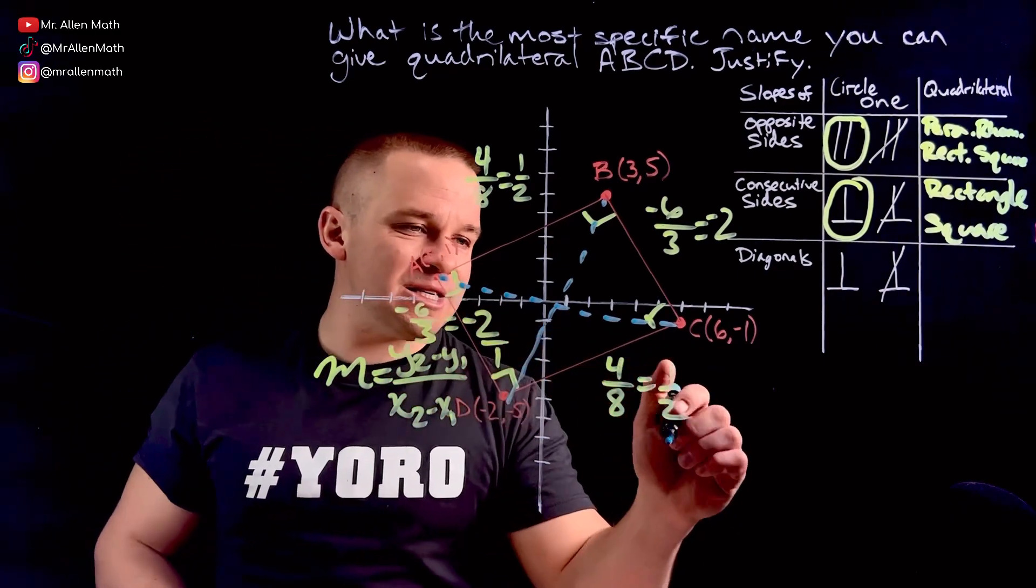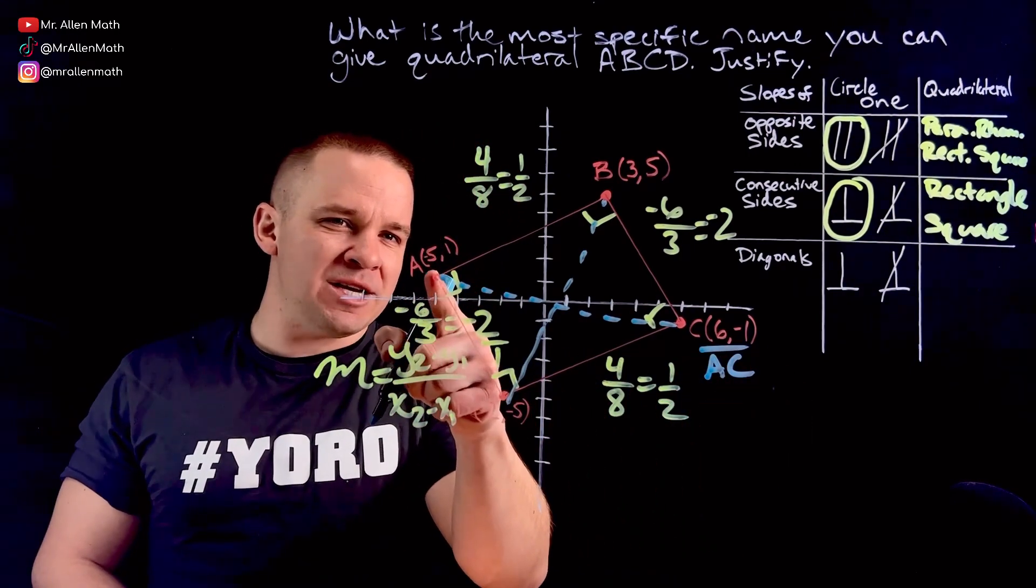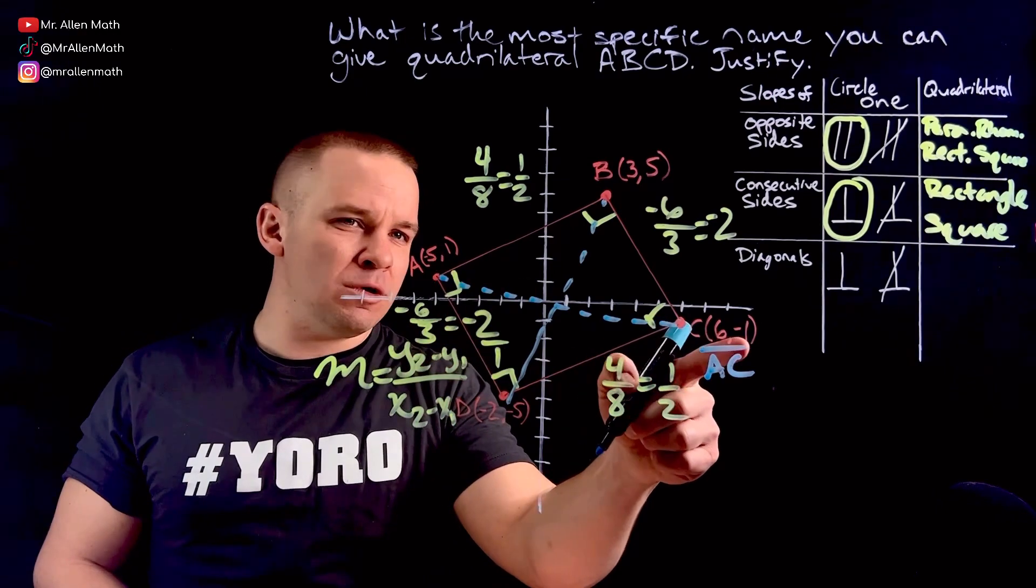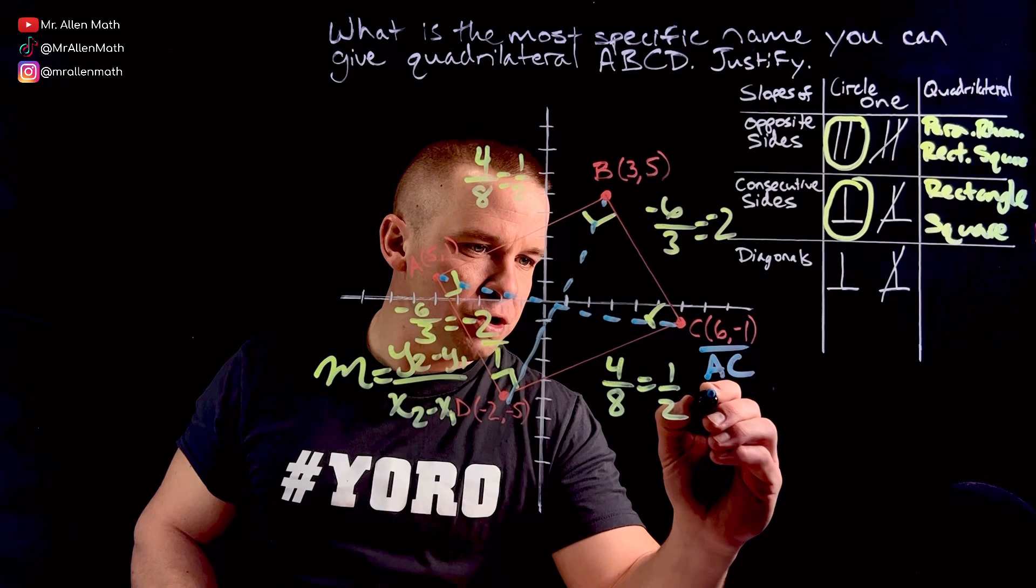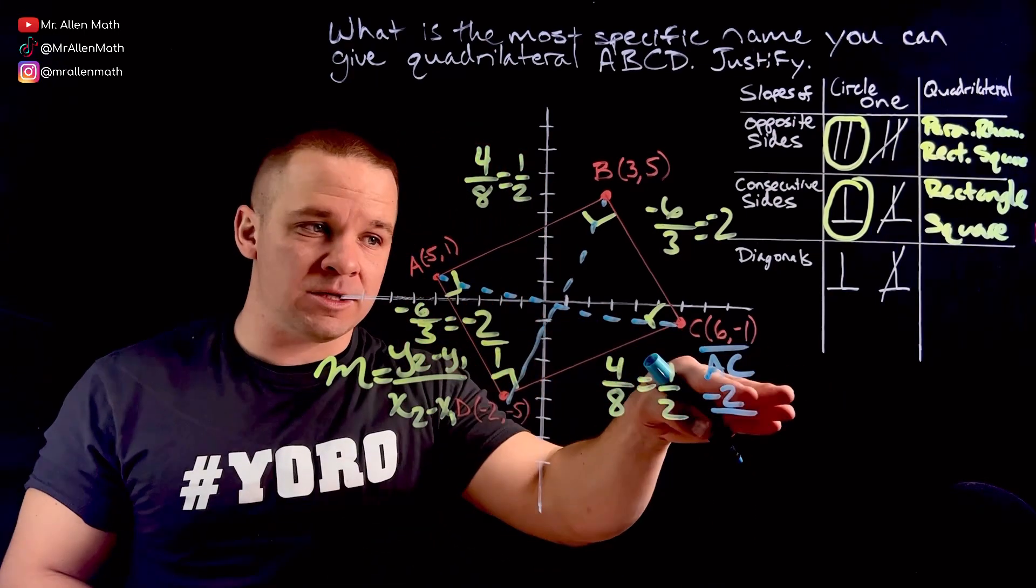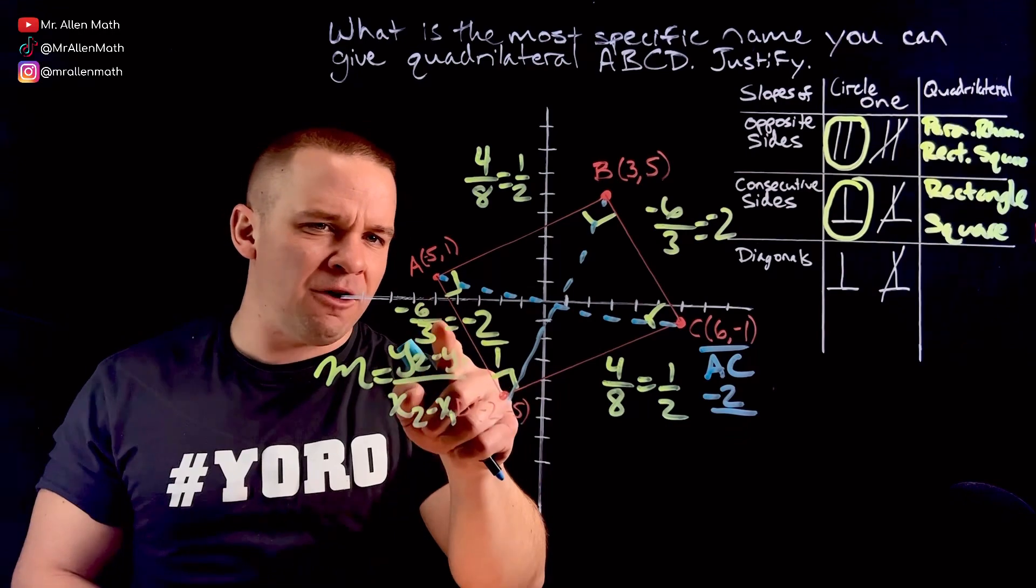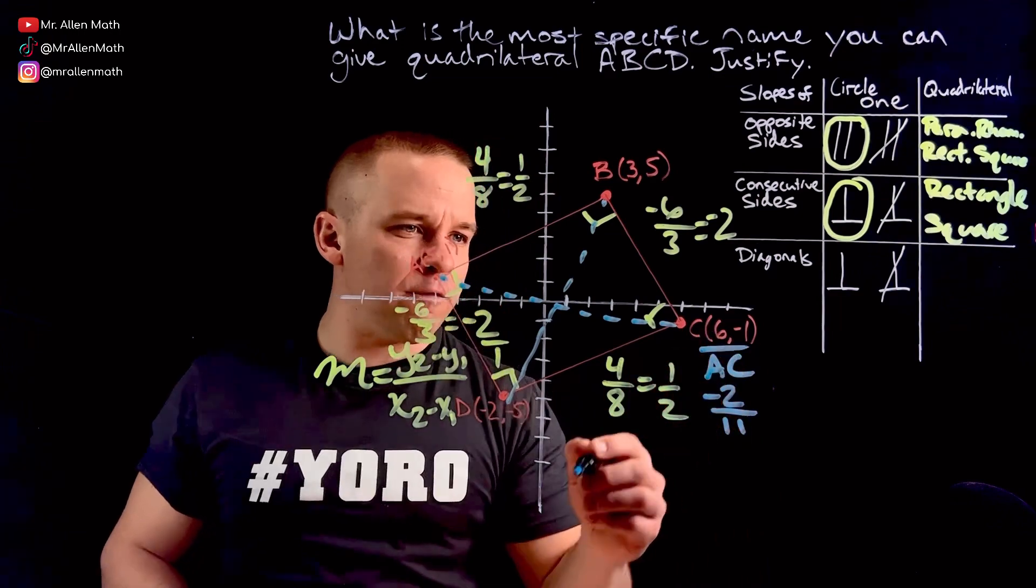From A to C. So for AC here, what's my slope going to be? Well, I'm going from 1 down to negative 1. So I'm changing 2. So my rise is down 2. I know this is going to be a negative slope because it's going down and to the right. As I go to the right, it's going down. So negative 2. And then how far am I going over? I'm going from negative 5 to 6. That's the difference of 11. So negative 2 over 11.